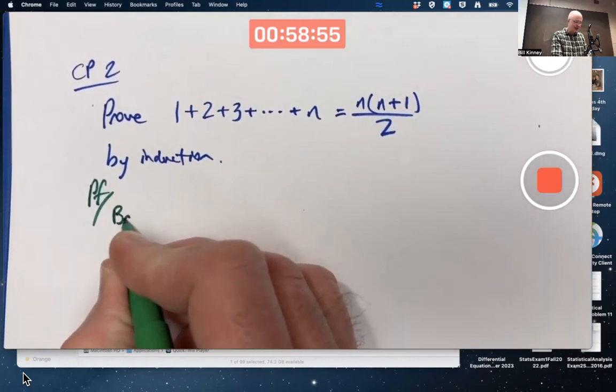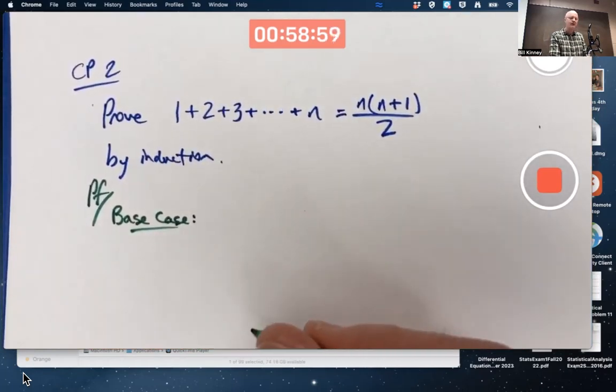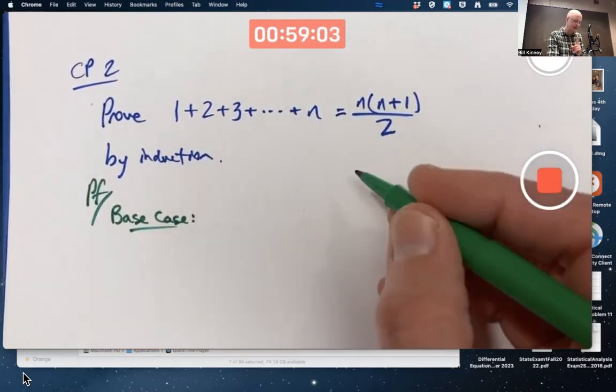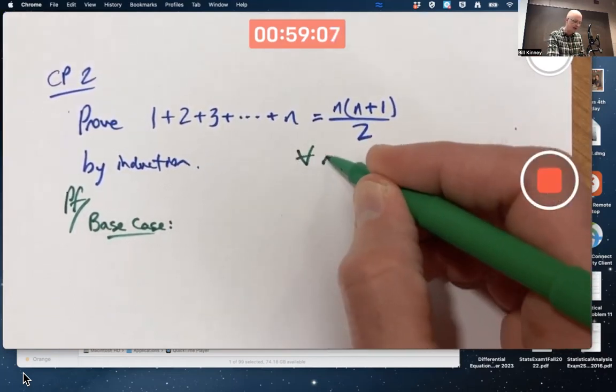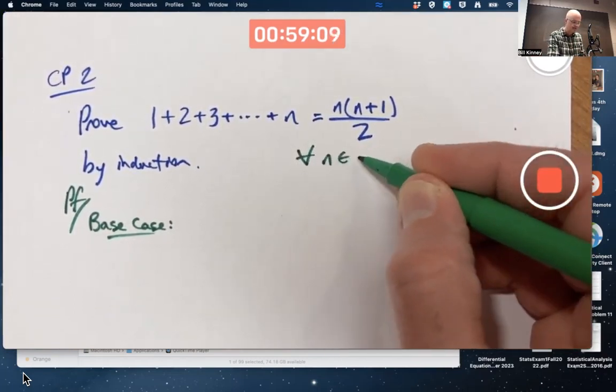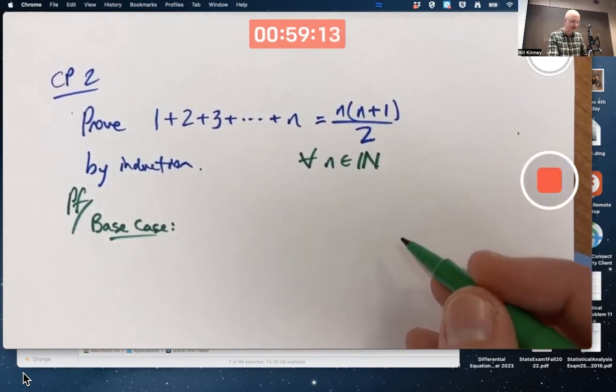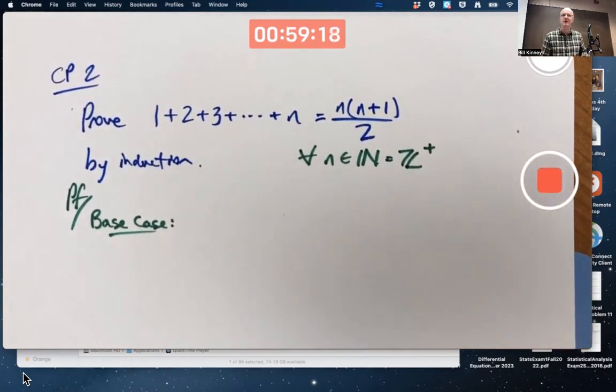The structure is still the same in either case. You have a base case. We're trying to prove that this equation is true for all natural numbers n. That's important. This could be thought of as the natural numbers or positive integers. I could write Z+ for positive integers.